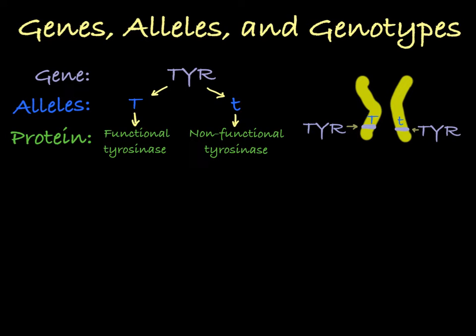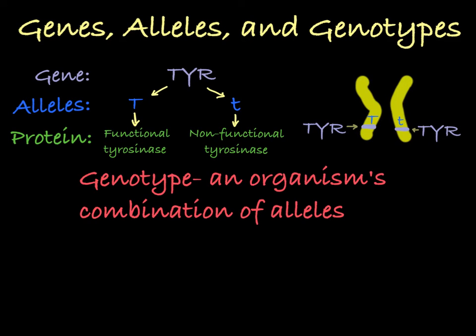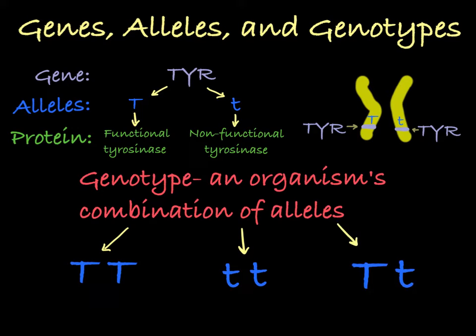Your combination of alleles is called your genotype. For example, you could have the genotype big T, big T, meaning you have two copies of the big T allele, or you could have the genotype little t, little t, which means you have two copies of the little t allele, or your genotype could be big T, little t, having two different alleles.